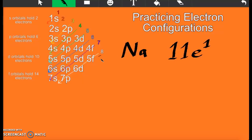So start at the beginning. 1s. And s's can hold 2 electrons. So 1s². This one here is your quantum number. And this is your number of electrons. Again, pretty simple.